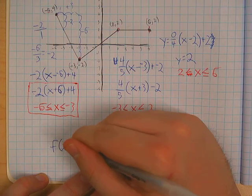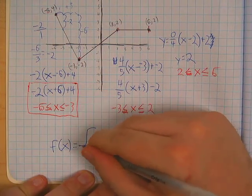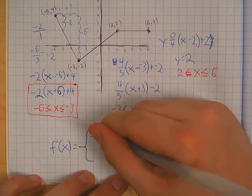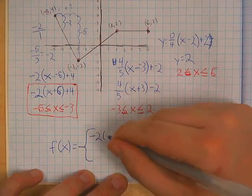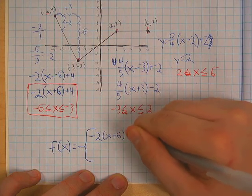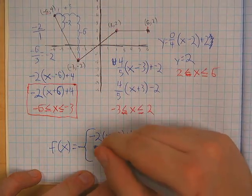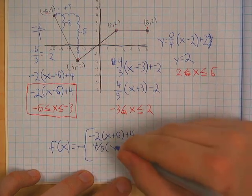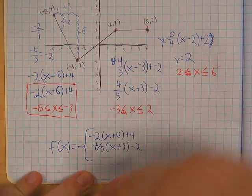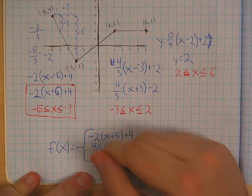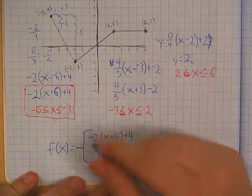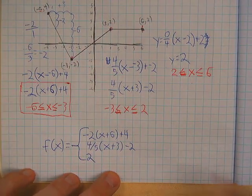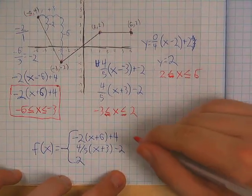So f of x equals — with a bracket to catch all my equations — and I'll list them off from left to right: negative two times x plus six plus four; four-fifths times x plus three minus two; and y equals two.